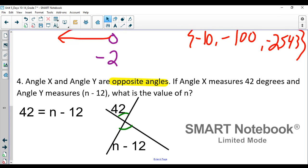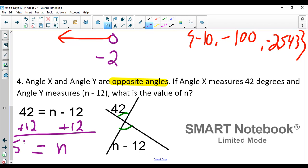And this is so simple. It's just actually a one step equation. We'll add 12 to each side and we'll get n is the same as 54. And to check it, 54 minus 12 is indeed 42.